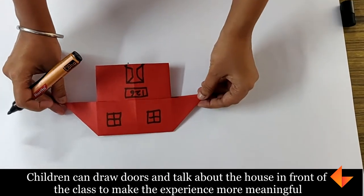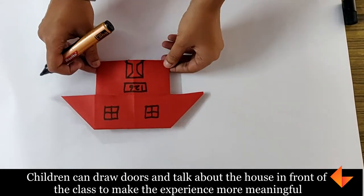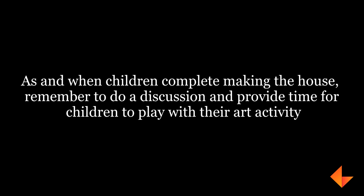And talk about the house in front of the class to make this experience more meaningful. You could do the origami house when you are having the theme of my neighborhood or my home, and make children bring their origami house and talk about how they come from home to school, where their house is, what their neighbors look like, and make the house as personalized as possible.